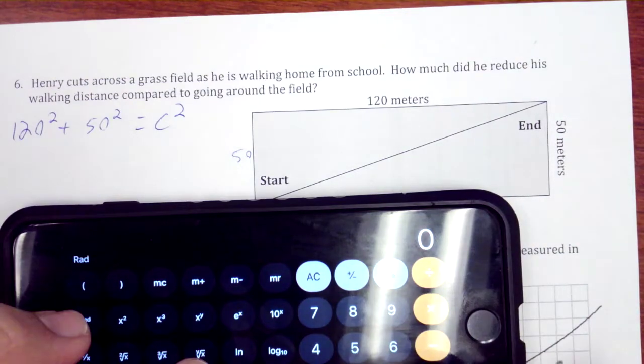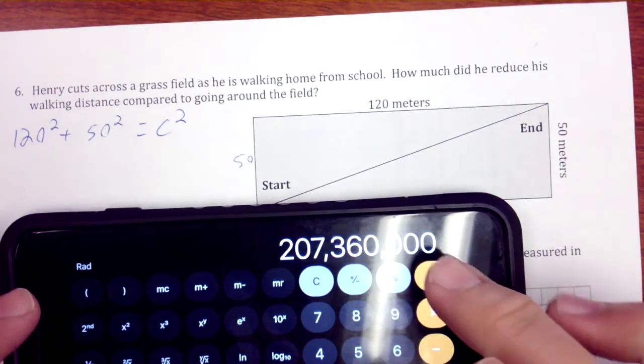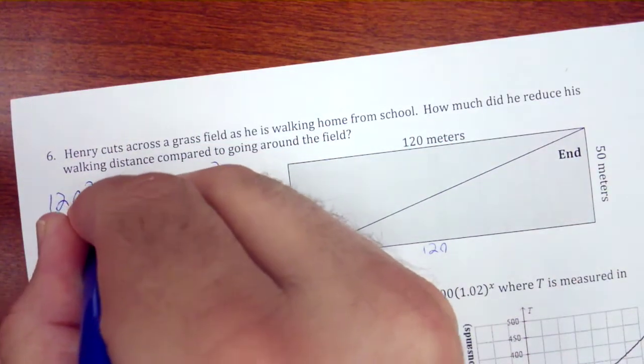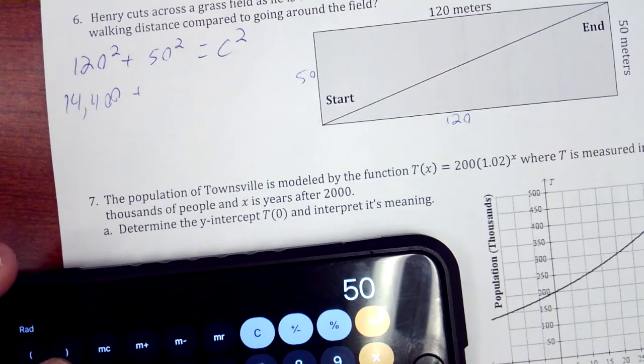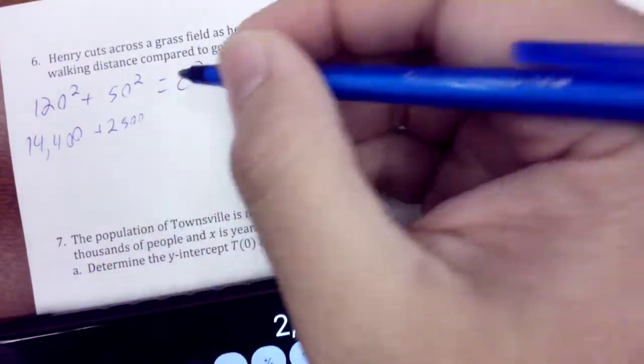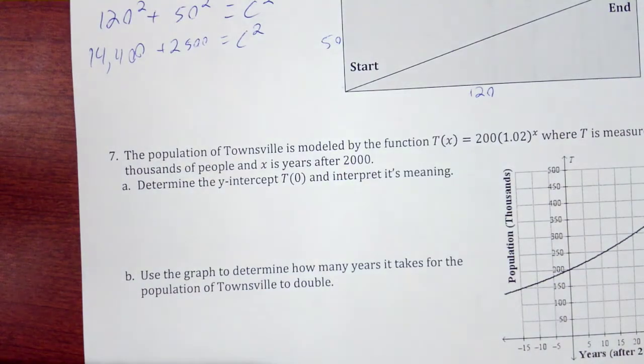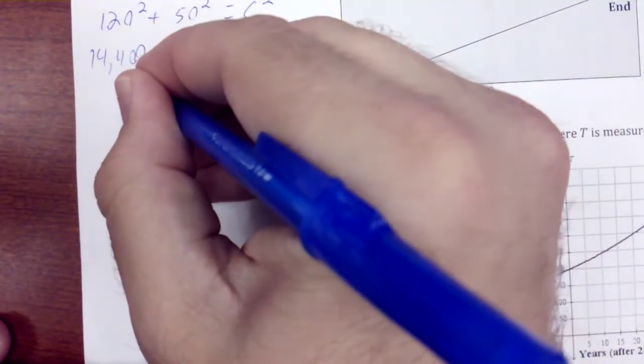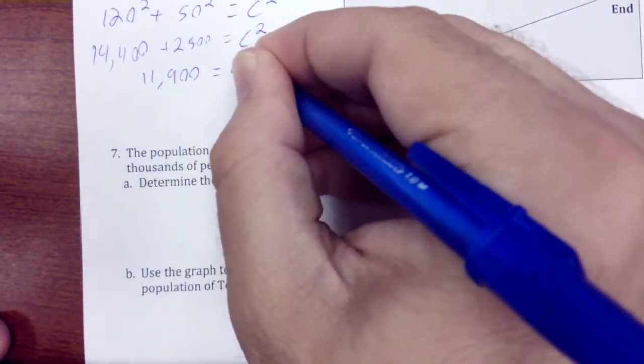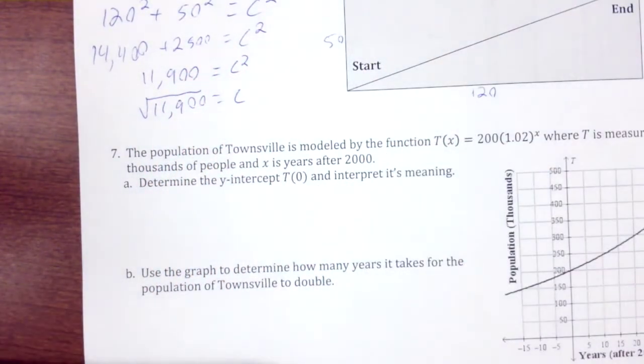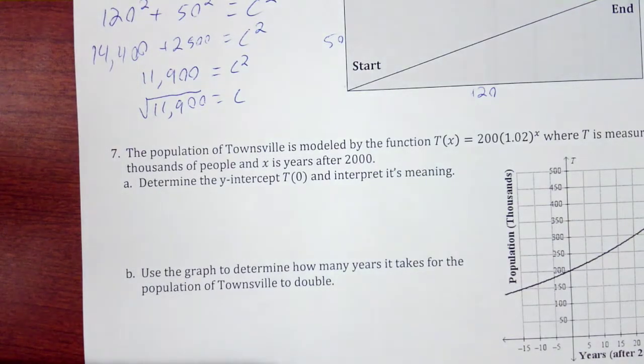We're going to go 120 squared is 14,400. And then 50 squared is 2,500 equal to c squared. 14,400 minus 2,500 is 11,900. I'm going to take the square root of 11,900, and that's equal to c.